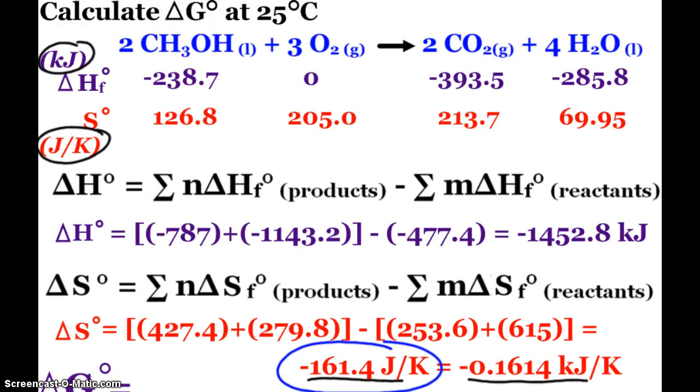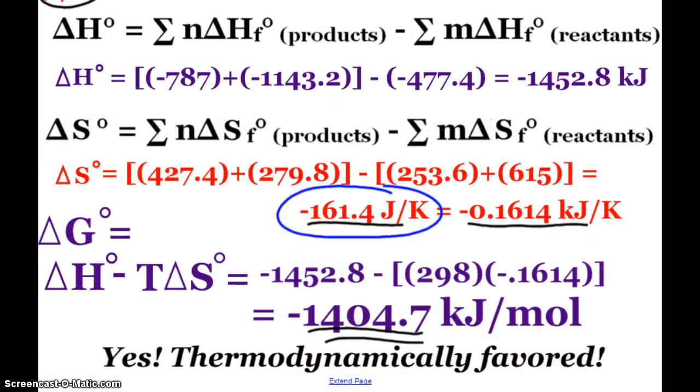All right, we went, we had three moles of gas down to two, so we definitely kind of expected a negative entropy change. But the ΔH of this reaction is so large, it overpowers that, and so this reaction, as written, ends up being very thermodynamically favored.